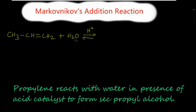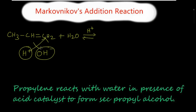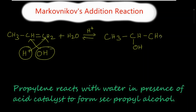This H₂O will split into H⁺ and OH⁻. Now, what happens? This H⁺ will get attached to this carbon and this OH⁻ will be attached to the second carbon. So what we get is CH₃–CH(OH)–, and this double bond will be converted into a single bond because one more hydrogen will be attached to the CH₂, so it becomes CH₃.